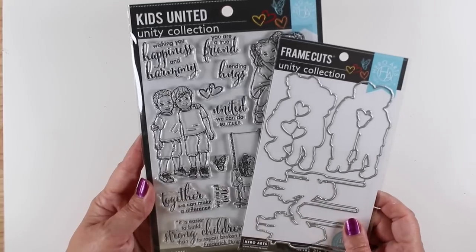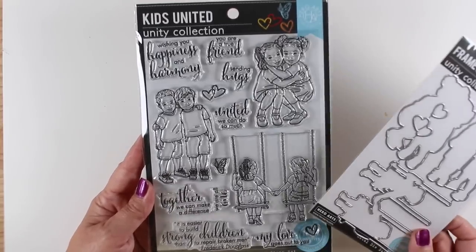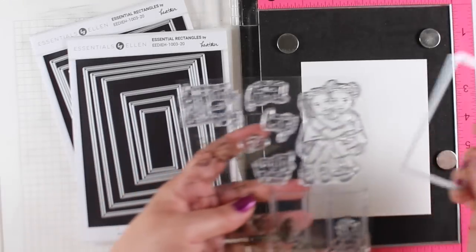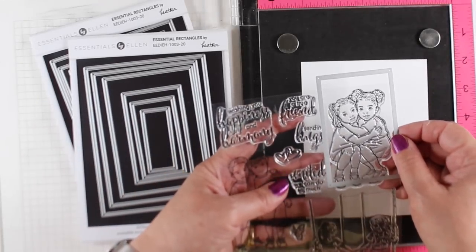It's got three sets of kids. There is a die set that you can get along with it if you need dies.